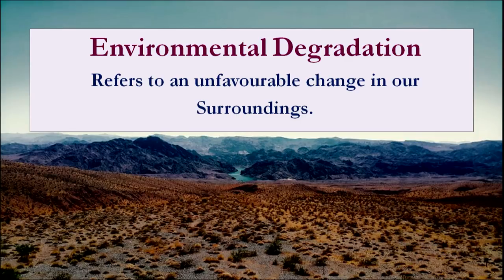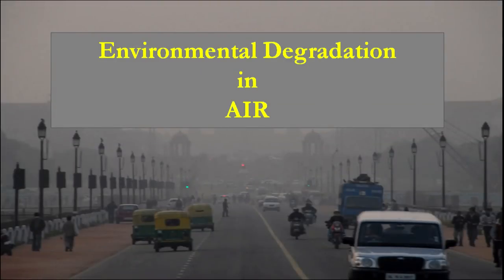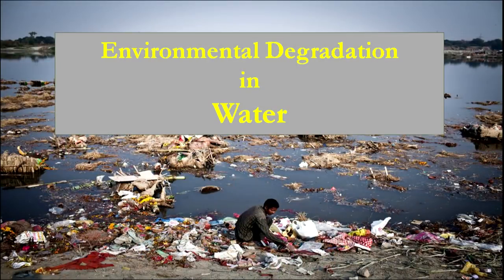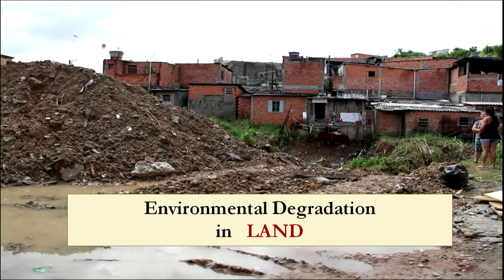Now what is environmental degradation? It refers to any kind of unfavorable change in our surroundings. Environmental degradation can occur in air, land and water. Here is a picture showing smog in a city which depicts environmental degradation in air. Here is a picture depicting environmental degradation in water, and industrial waste being discharged into a water body showing environmental degradation on land.